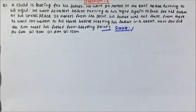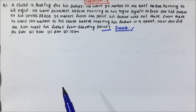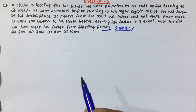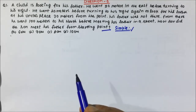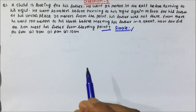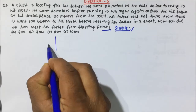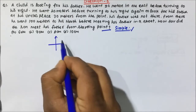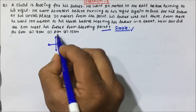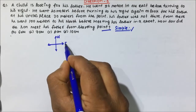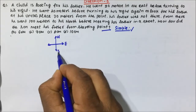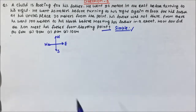This question is more of English rather than reasoning — if you understand the sentence, you will easily be able to solve it. Before solving any direction question, the first thing we do is draw the direction diagram. This will be north, this will be east, this will be south, and this will be west.